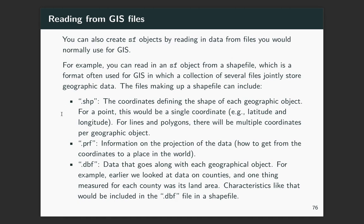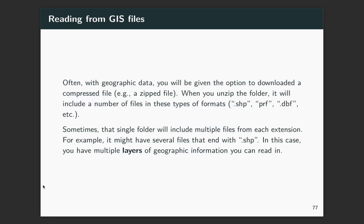So typically you will have files that might include SHP. This gives the coordinates for the shape of each geographic object, so the geographic information. You might have PRF, which has information on the way that that data is projected. You might have DBF, which includes data that kind of syncs up with each of those. So when we were looking earlier at the land area in each county, for a shape file of that, you would have information in the DBF about the data like the land area. So often when you get this, you will get a zip file and then you'll need to unzip it. And once you unzip it, you'll see all these different folders.